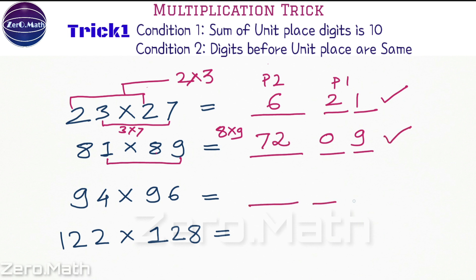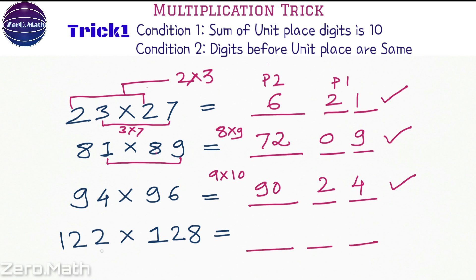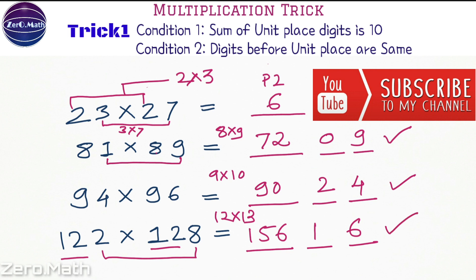Let us quickly figure out the next problem. 6 into 4 at the unit place gives 24, and 9 into 10 — its next consecutive number — gives 90. So 9024 is our answer. For the last one, 8 plus 2 is 10 and the remaining digit is 12, which is the same. So 8 into 2 is 16, and 12 into its next consecutive digit 13 gives 156. So 15616 is our answer.